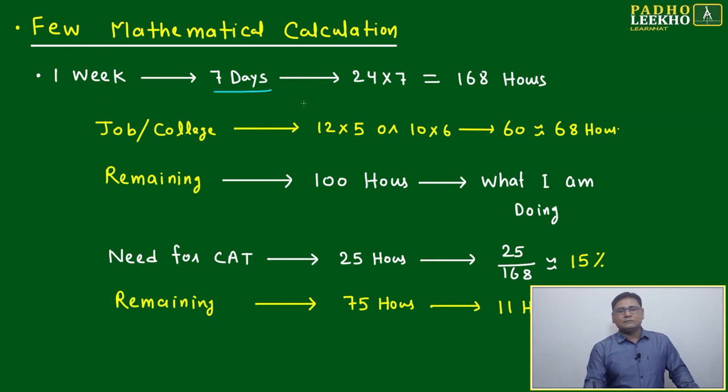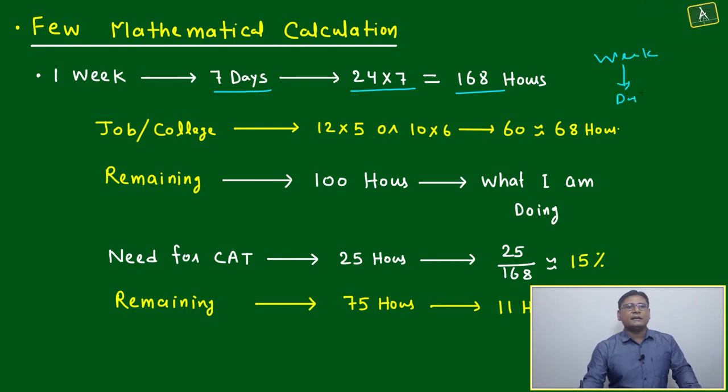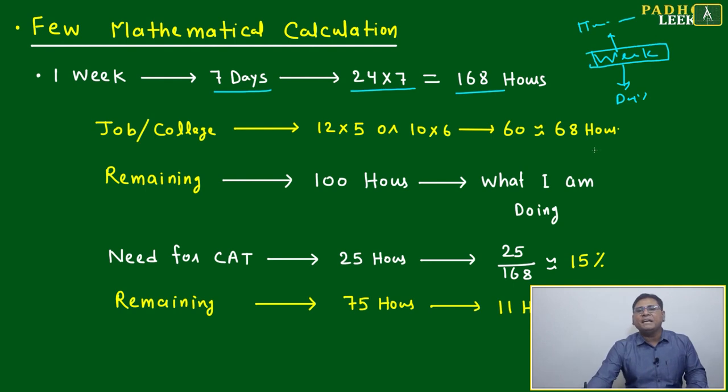One week equals seven days. 24 times 7 equals 168 hours we have in one week. First we'll plan weekly what we can do. This plan will move both directions - from week we'll go to daily downside, and from week we'll go to monthly and annually. This will be our base for measurement because we'll get the idea: 168 hours in one week.